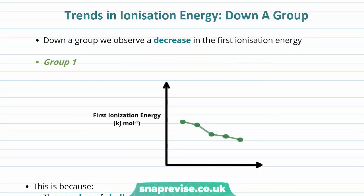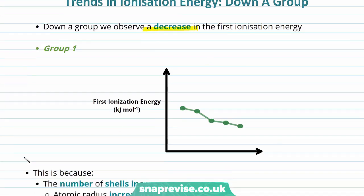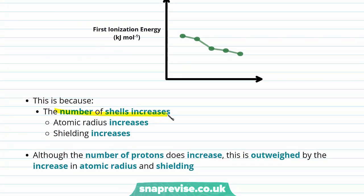Down a group, we observe a decrease in the first ionization energy, as shown in this graph for group one. This is because the number of shells increases, the atomic radius increases, and the level of shielding increases. Although the number of protons also increases, this is outweighed by the increase in atomic radius and electron shielding, requiring less and less energy to remove the outermost electrons as we move down the group.